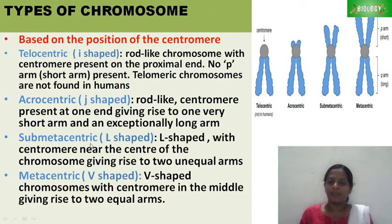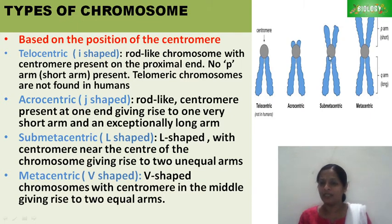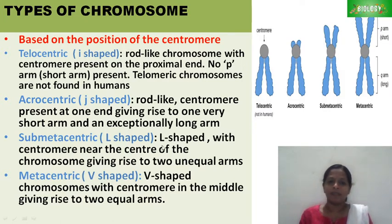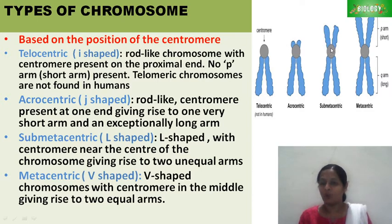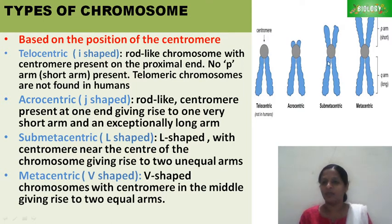Submetacentric — when the centromere is near to the center, but not exactly at the center, it is called submetacentric. It is an L-shaped chromosome with the centromere near the center, giving rise to two unequal arms. The last type is metacentric, where the centromere is at the center, giving rise to two approximately equal arms — a V-shaped chromosome.